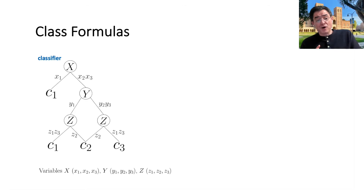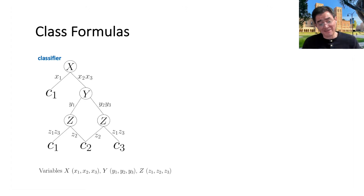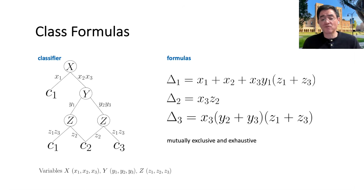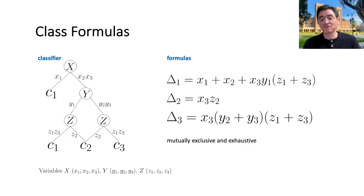Let's highlight some key technical ideas. The notion of a class formula is very important. Suppose you have a classifier — in this case a decision graph over three ternary variables — with three classes C1, C2, C3. Each class has a formula; these are what we call discrete formulas over discrete variables. Each formula captures or characterizes all instances in that class: if an instance satisfies the formula, it is in that class. The three formulas are mutually exclusive and exhaustive — an abstract representation of the classifier. Such class formulas are easy to obtain for decision trees, decision graphs, SDDs, and so on.